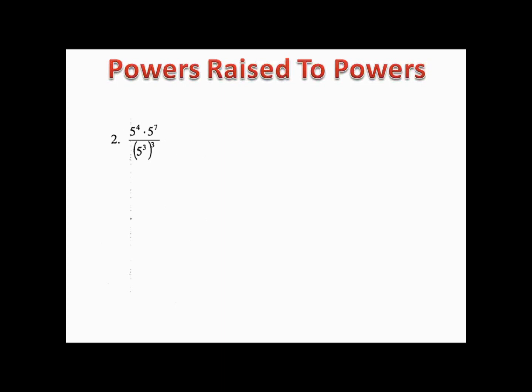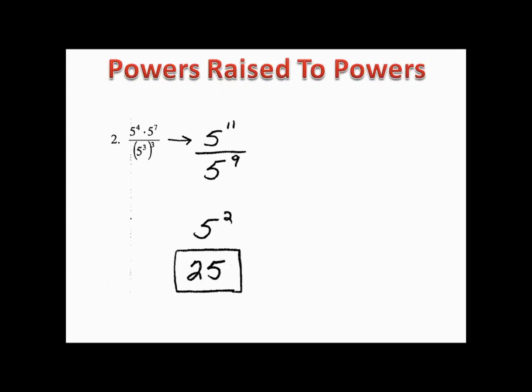Example two shows how the properties of exponents work. On top we have multiplication: 5⁴ times 5⁷. On the bottom we have (5³)³. On the top, we add exponents when multiplying, giving us 5¹¹. In the denominator, we distribute the exponent: 3 times 3 gives us 5⁹. Then subtracting exponents for division gives us 5², which is 25.